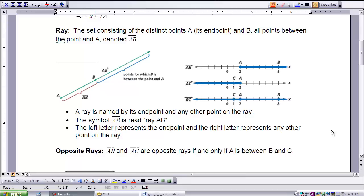The next thing we're going to define in this lesson is what is a ray? It is the set consisting of the distinct points A, its endpoint, and B, all points between the point and A, denoted as ray AB.